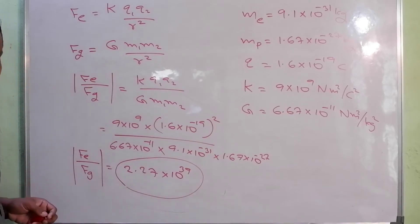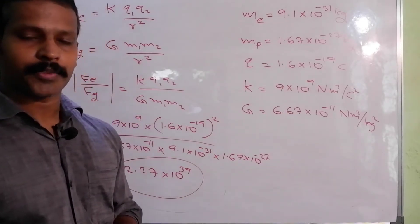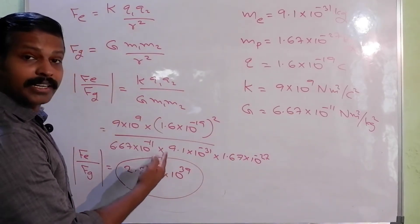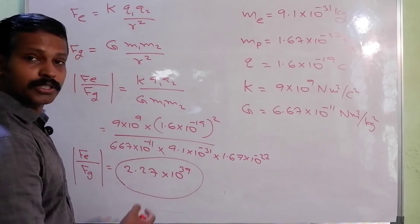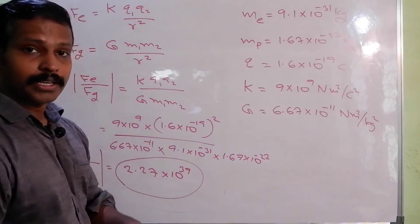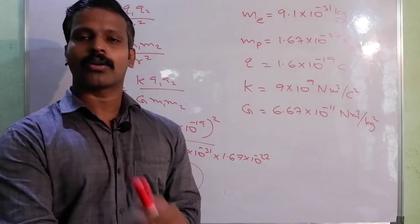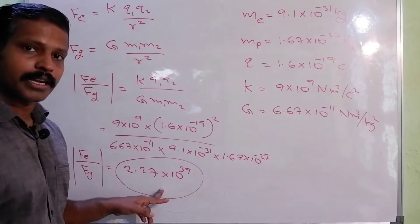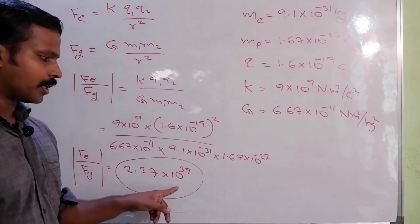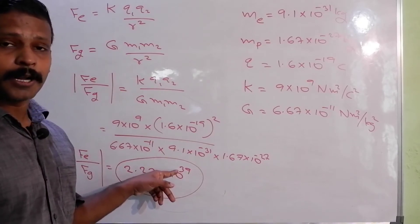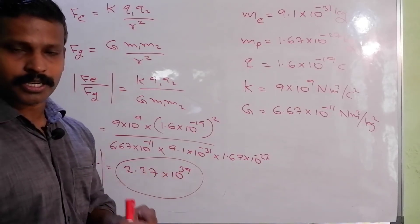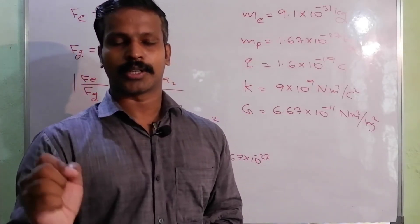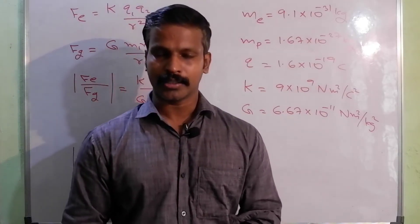This is our value. If we get the value for electron and proton, we also have gravitational force. The value is 2.27 into 10 raise to 39. This means the electrostatic force is very high for electron and proton — 10 raise to 39 is a very large number. The value of the electrostatic force is very high.